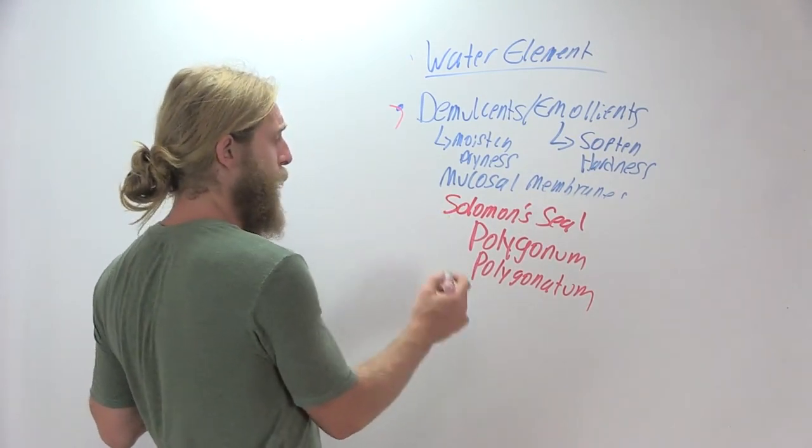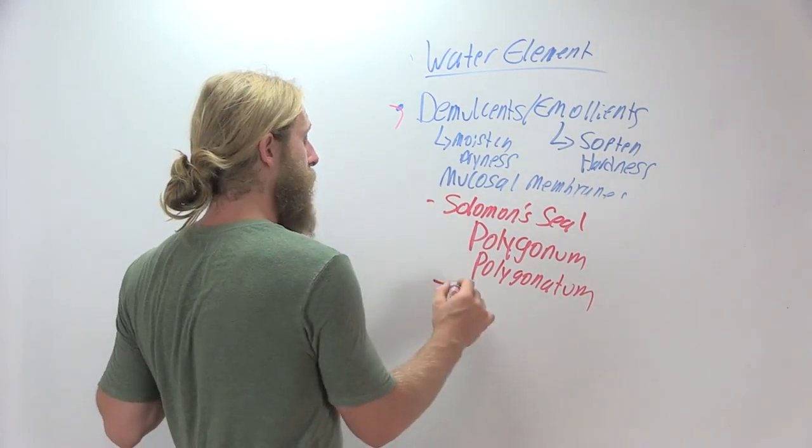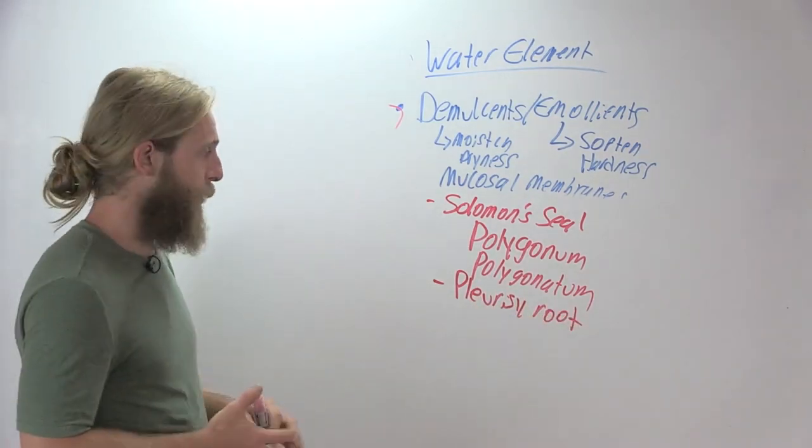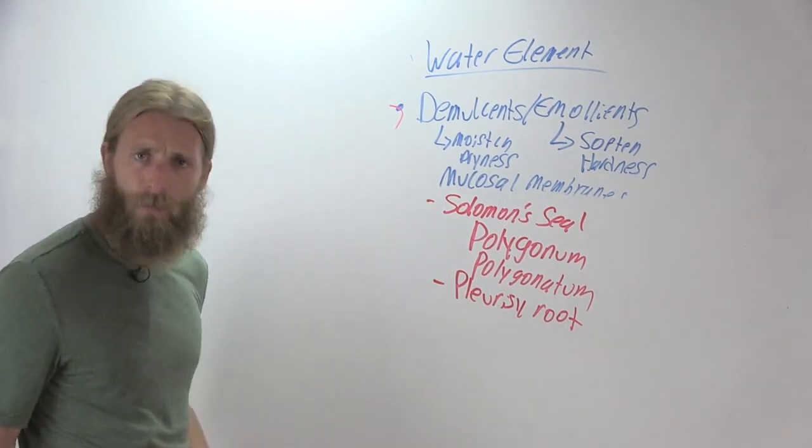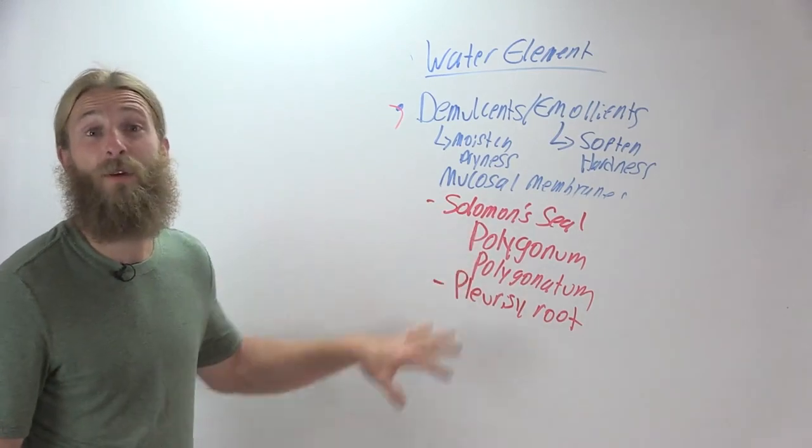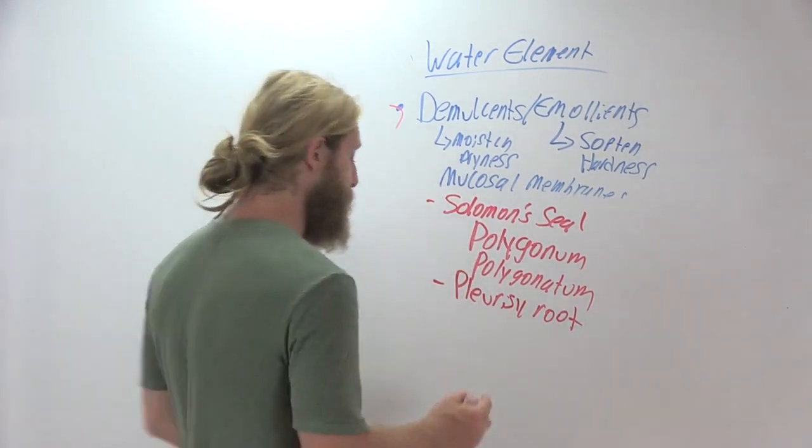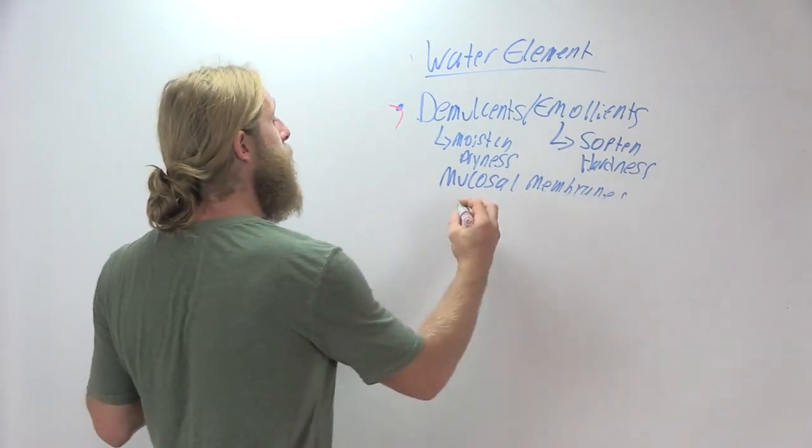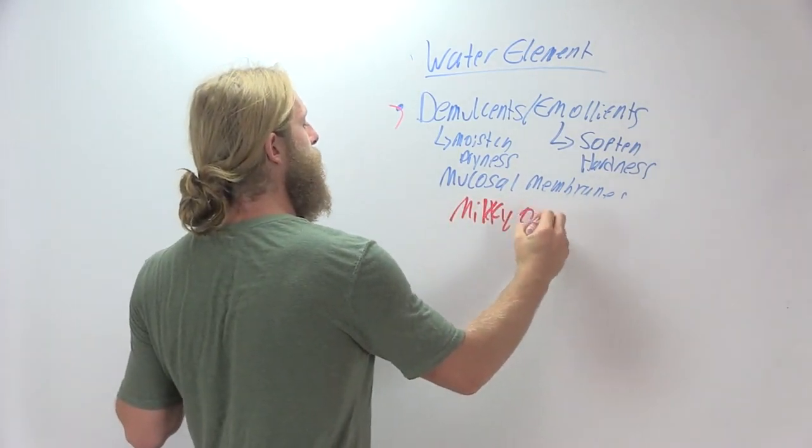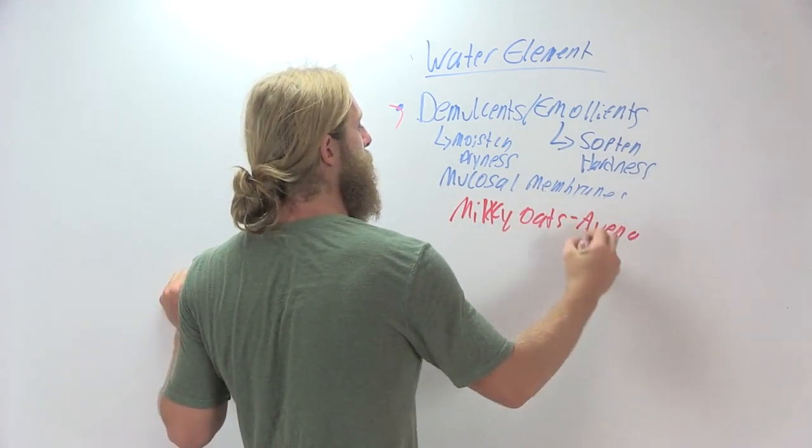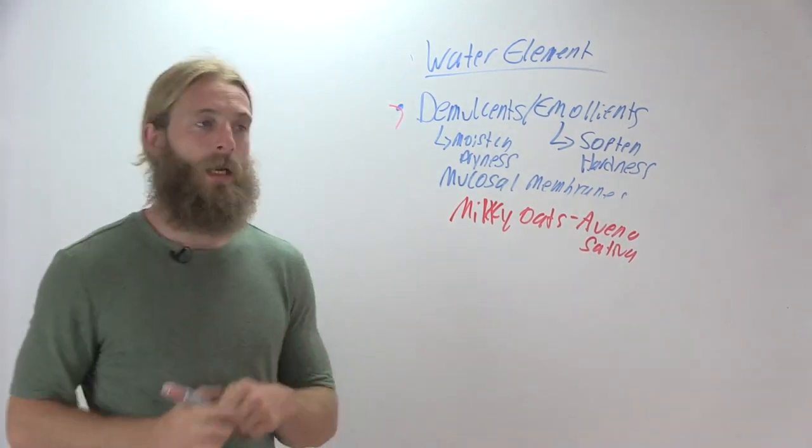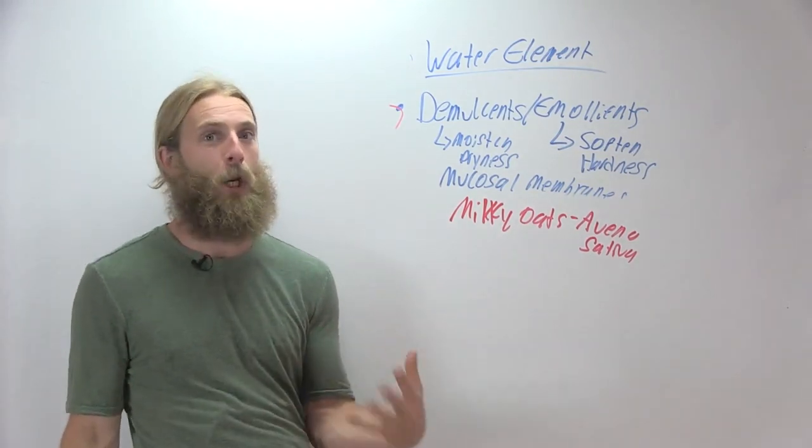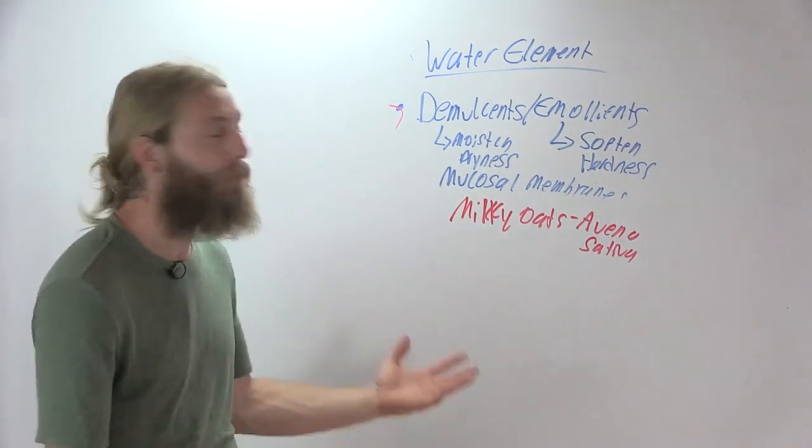The other remedies that I like for the joints here would be, again, we see pleurisy root is really nice for drawing moisture into the joints. Those are kind of the two main ones that I like. Licorice can be used there as well. But very nice specifically for the joints. And then if we're looking at the nervous system, my top remedy for dry atrophy in the nerves is milky oats, which is Avena sativa. Excellent moistening remedy. Pretty neutral temperature wise. I very rarely say everyone can take an herb, but I kind of feel like almost everyone can take milky oats safely. It's very gentle, but it's very nice for restoring and rebuilding.